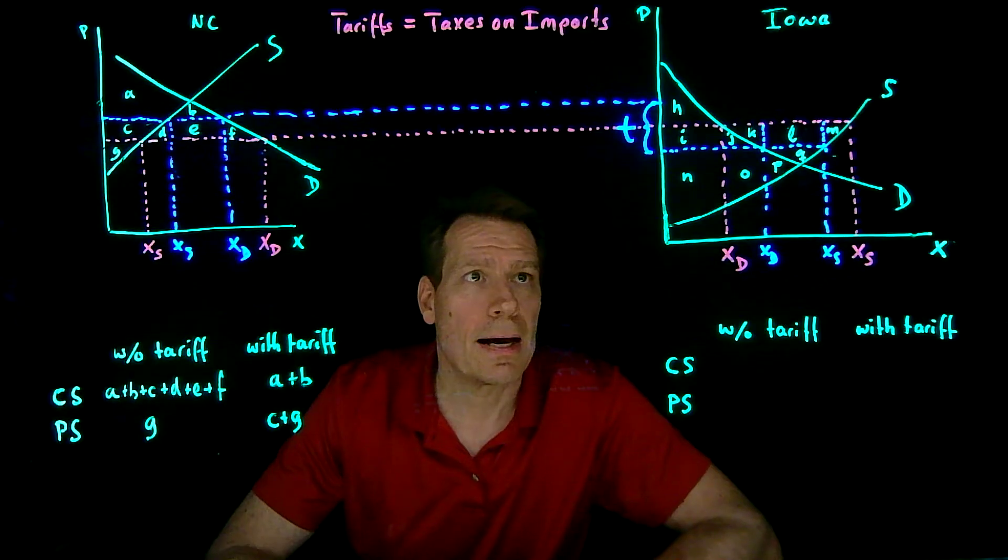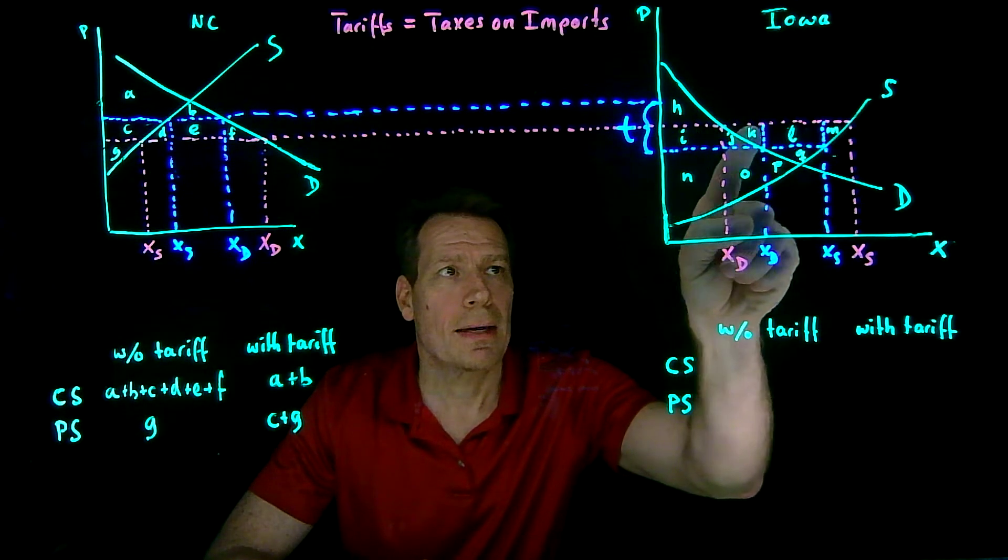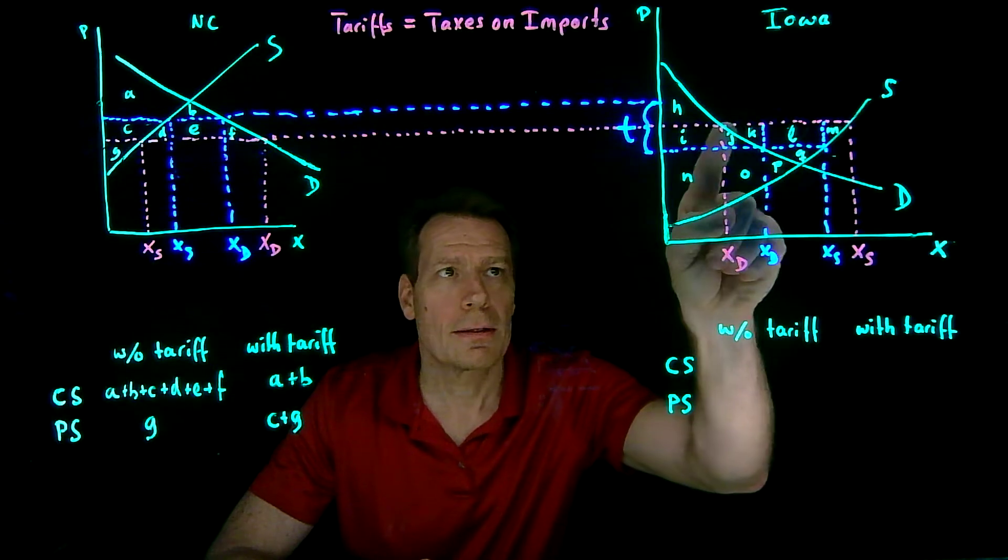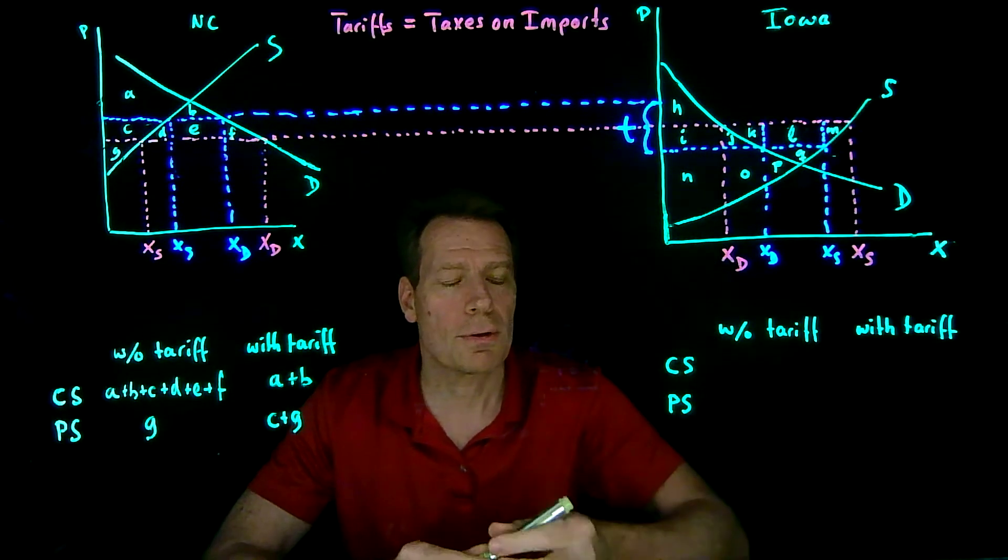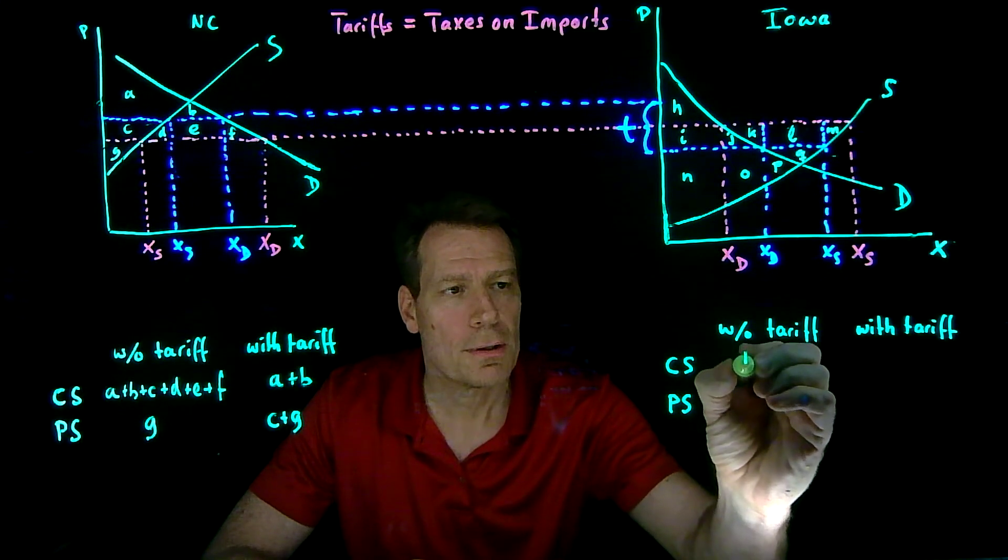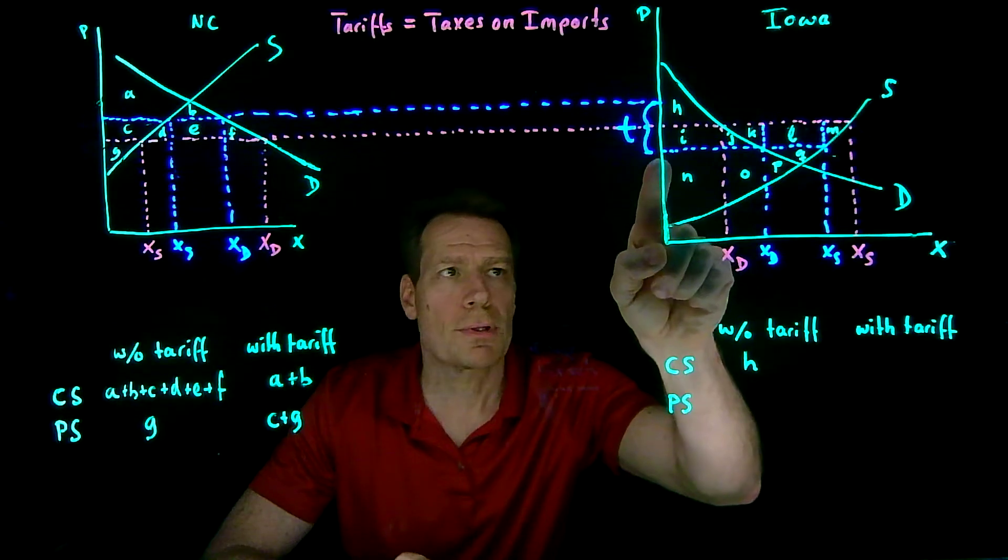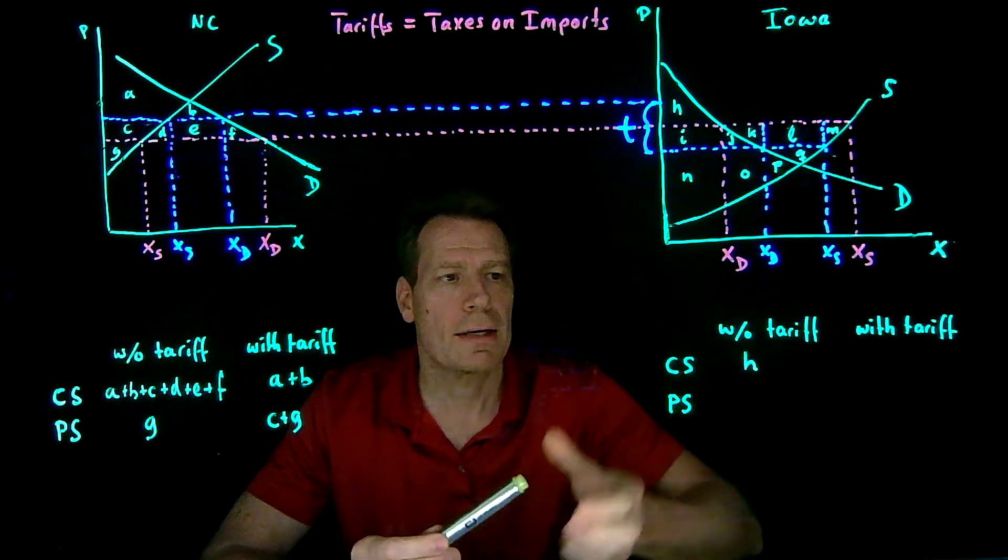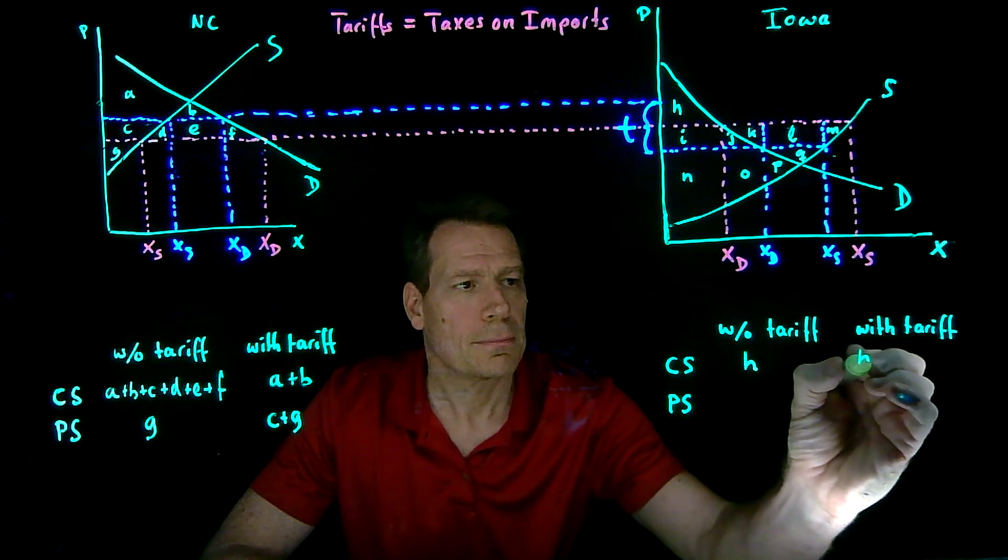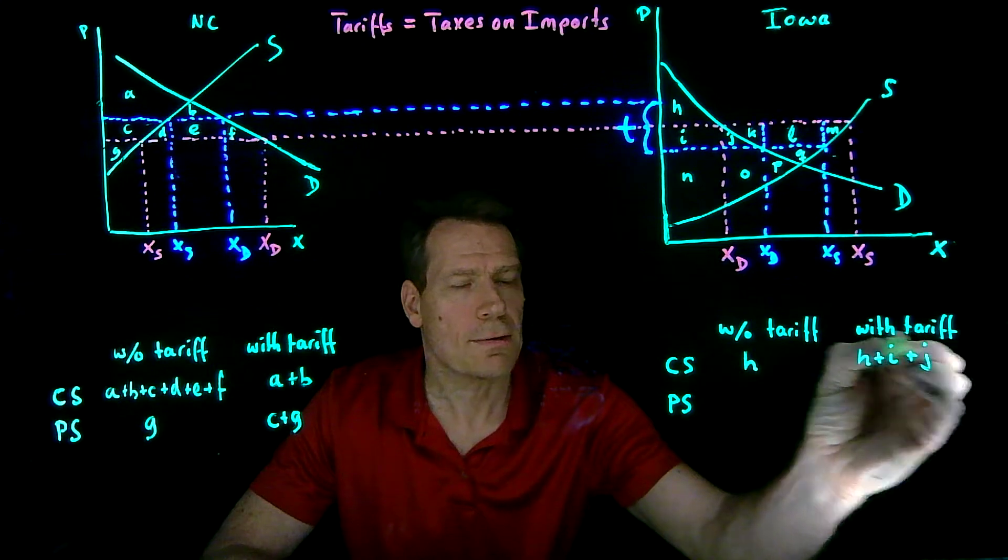What about in Iowa? Well, initially Iowa consumers were buying at the magenta price. They were buying relatively little. Everything above that price up to the demand curve gives us the area H for their consumer surplus. But then the price drops, so they buy more at that lower price. They get surplus H plus I plus J. They are better off because prices have fallen.